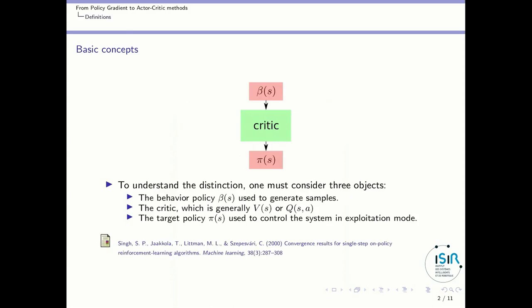To explain this distinction, we have to introduce basic concepts. To understand the distinction, we must consider three objects. One is called the behavior policy, and I will note it beta of s. That's a policy which is used to generate samples, and it does not need to be the policy that the agent is learning.